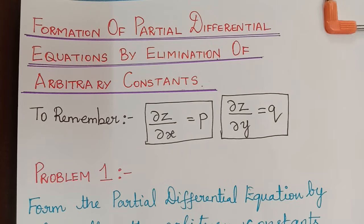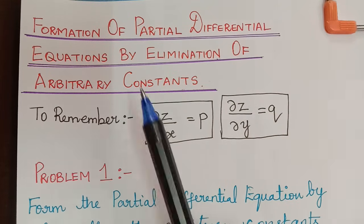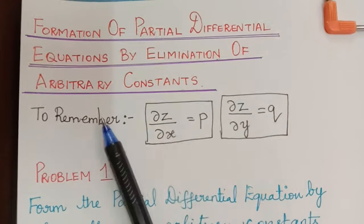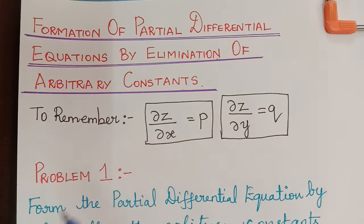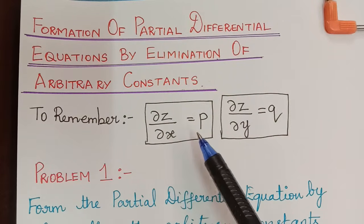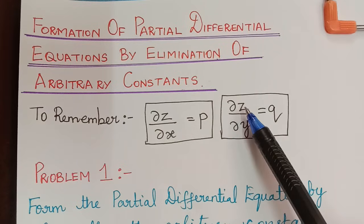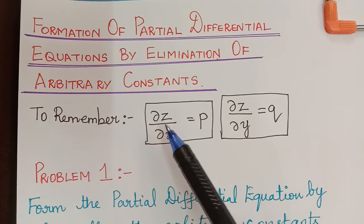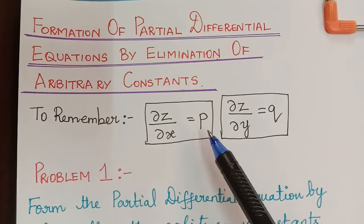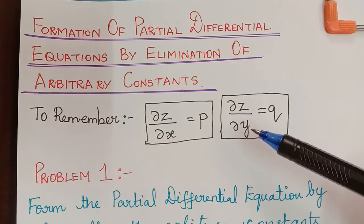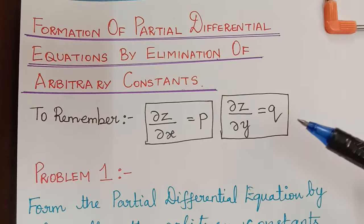In this video, we shall learn how to form a partial differential equation by eliminating the arbitrary constants. We have to remember that when we differentiate z with respect to x, we get p, and when we differentiate z partially with respect to y, we get q.